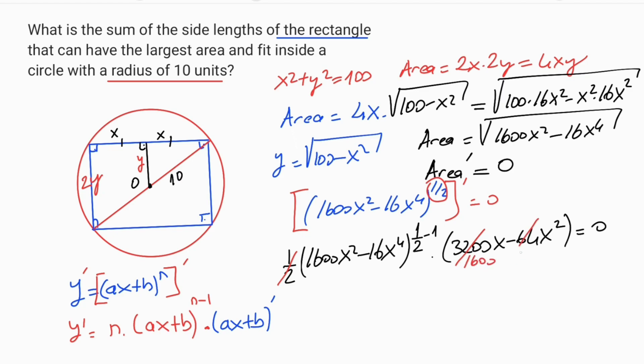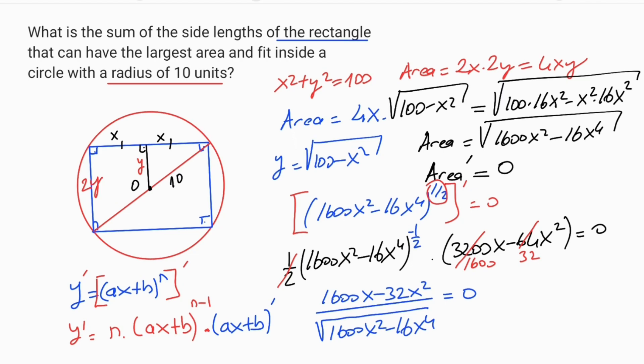So here is 32. So 1600x minus 32x squared over, here is negative 1 over 2. So you can write it like this, over square root 1600x squared minus 16x to the power of 4, equal 0.